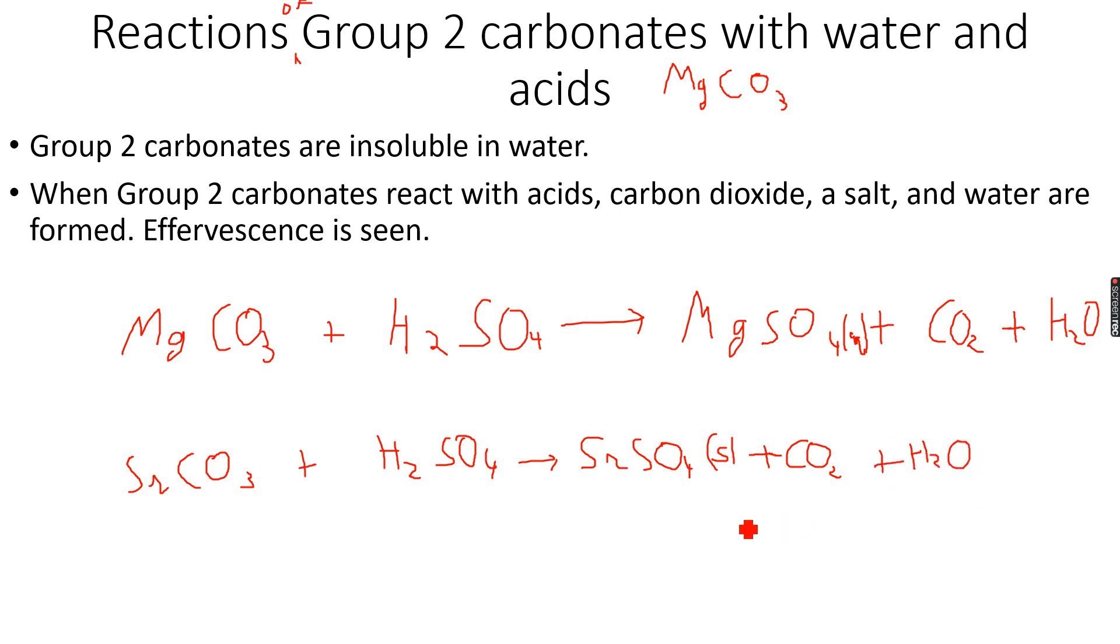Now if you see in this case, again we get a salt plus carbon dioxide plus water as I've said over here. However, in the case of MgSO4, it's an aqueous salt. In the case of SrSO4, which is strontium sulfate, it's a solid salt. Now why is there this difference?